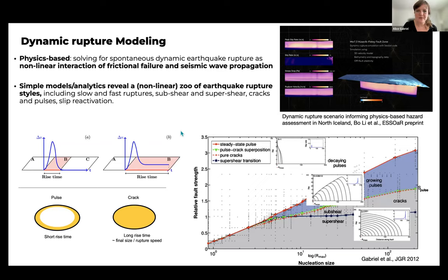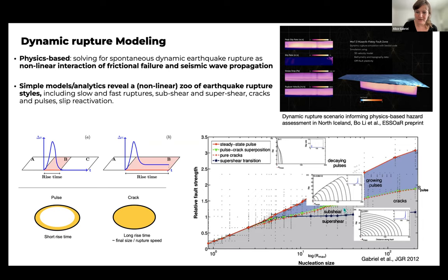We can spin up a whole phase diagram, for example thinking about relative fault strength — how much push each earthquake has to start — leading through a zoo of rupture styles: decaying pulses, growing pulses, cracks, sub-shear, and super-shear. However, some predicted rupture behaviors like super-shear rupture speeds are observed much less commonly than simple models would expect. Also, it is difficult to measure the difference between pulses or cracks if you really want to resolve the small difference in the tail of the rise time.